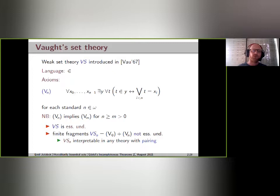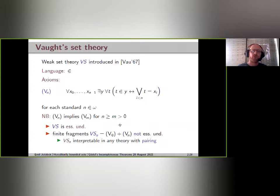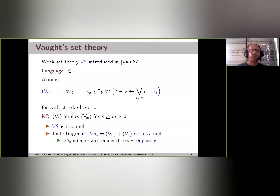These axioms are linearly ordered: if we have an n-element set axiom, we have it for all positive n up to that bound. The basic weak fragments of Vaught's set theory are the theories VSn, whose axioms are just that there exists an empty set and that every n-element collection forms a set. This theory has a decidable extension, and the known reason for that is somewhat indirect: all these theories VSn are interpretable in any theory with pairing.